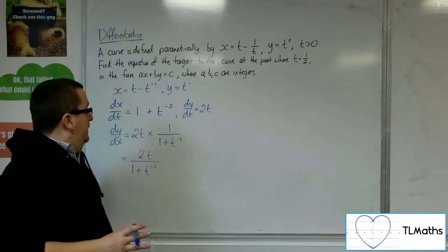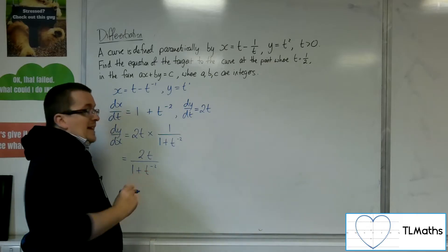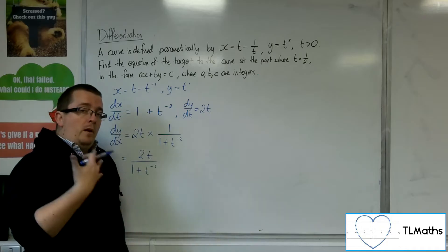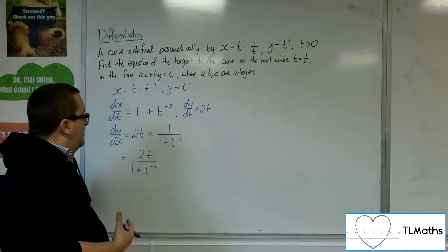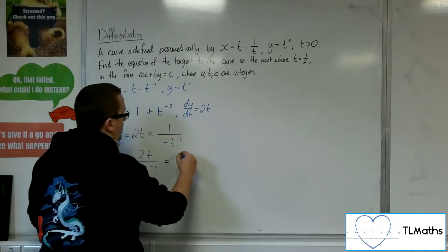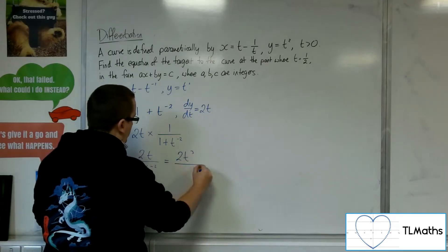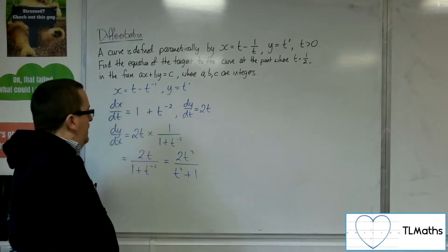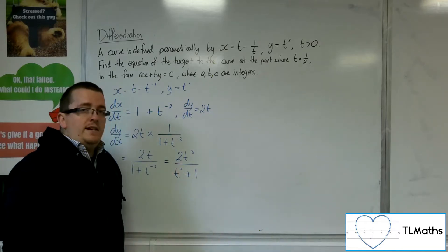Now, personally, I don't like negative powers within fractions. So, what I'm going to do is I'm going to multiply top and bottom of that fraction by t squared. So, I'm going to have 2t cubed over t squared plus 1. Okay, so that is my gradient function.